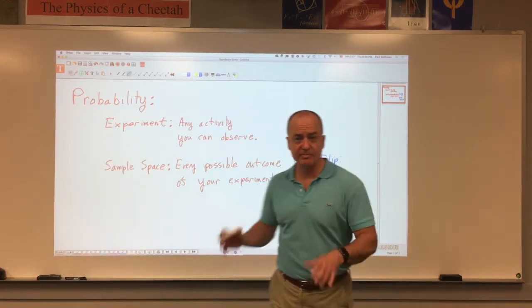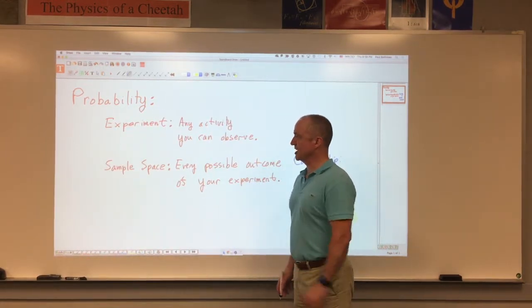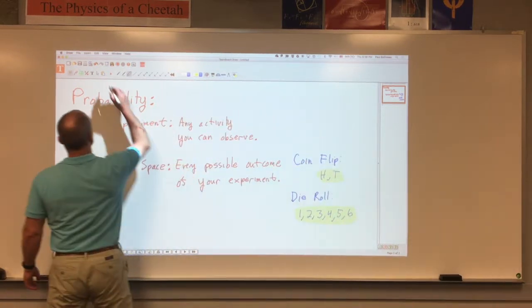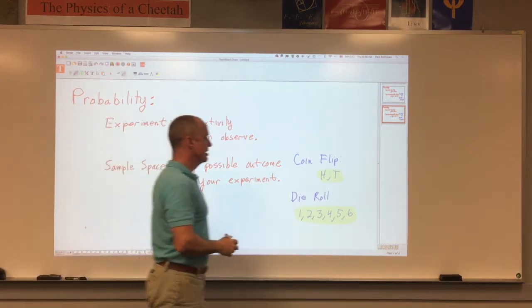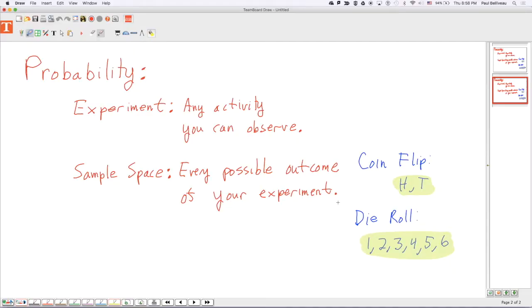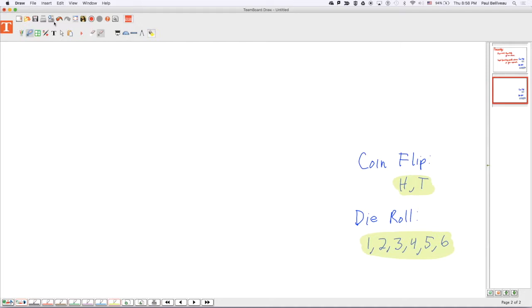Okay. So, you run an experiment. A bunch of things can happen. That's called a sample space. Now, what else do we need to talk about? Well, sometimes we don't particularly care equally about all of our outcomes. So, we have to talk about something called events.